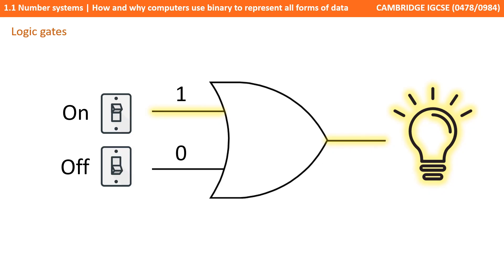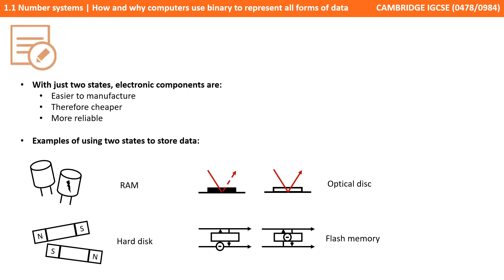And this is why binary is eventually used to represent all forms of data. All these methods are simple to build components for, making them cheaper and more reliable.